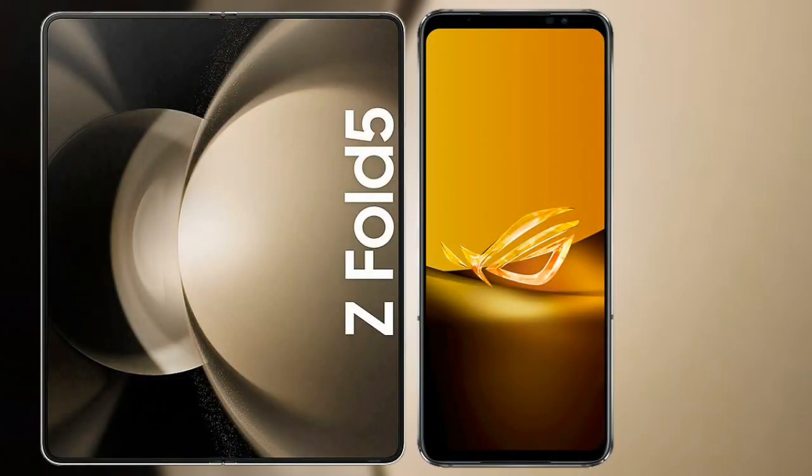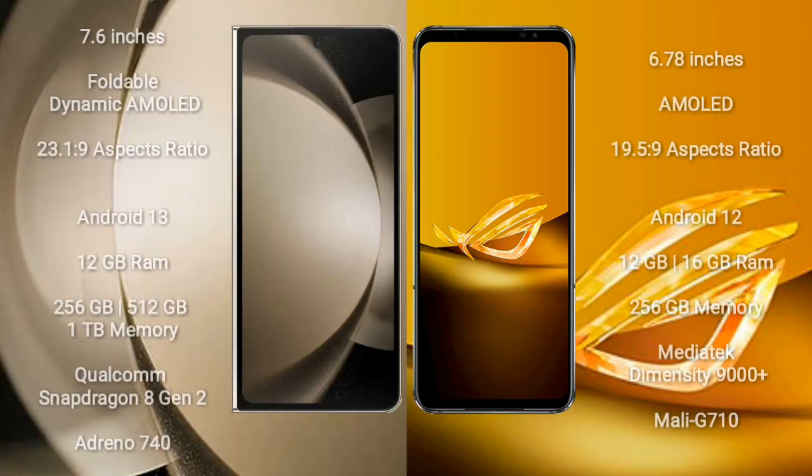I will compare the new Samsung Galaxy Z Fold 5 with Asus ROG Phone 6D. Samsung Galaxy Z Fold 5 comes with a 7.6-inch foldable dynamic AMOLED display and an aspect ratio of 23.1:9. Asus ROG Phone 6D has a 6.67-inch AMOLED display and an aspect ratio of 19.5:9.